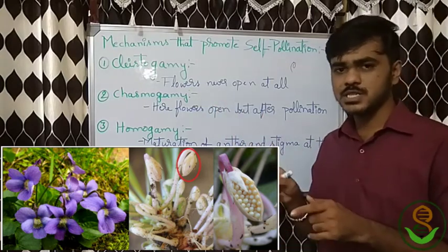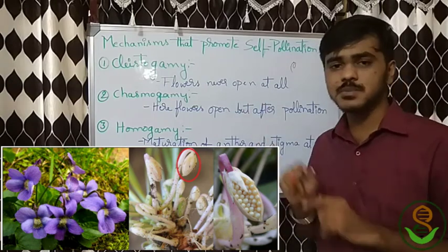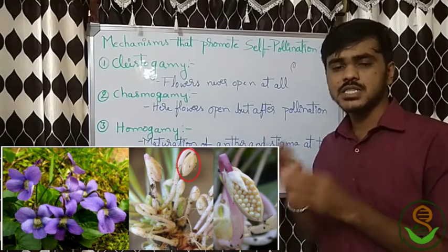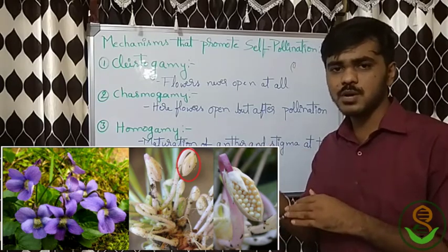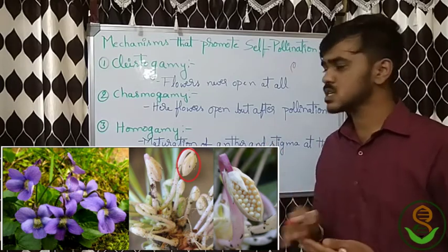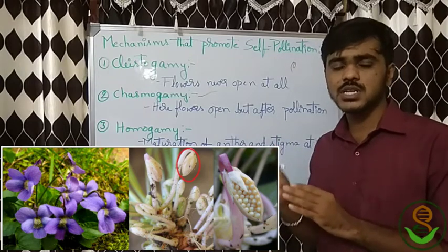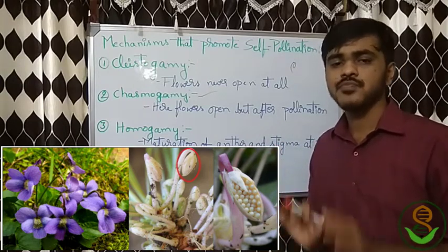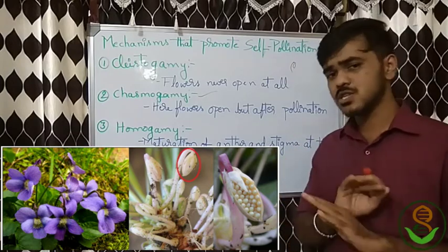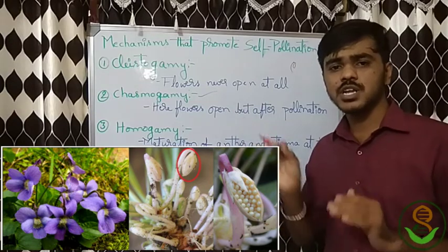Observe the first image, which is the example of chasmogamy — the above-ground flower of the viola plant. This flower opens only after pollination; such a condition we call chasmogamy. The above-ground flower in the viola plant is a chasmogamous flower. Because it opens only after pollination, there is no possibility of cross-pollination, as there is no transfer of pollen grains from another plant.